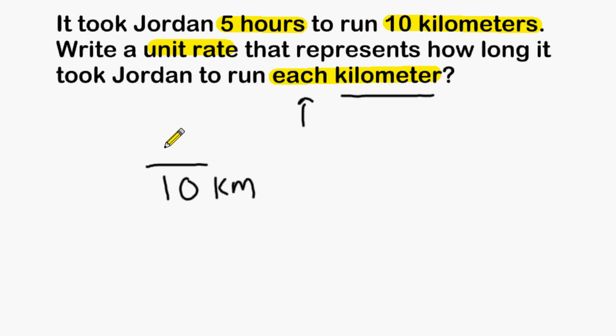And it took him 5 hours to run the 10 kilometers. After setting up your fraction, you can reduce it to lowest terms, and 5 out of 10 would be one half.